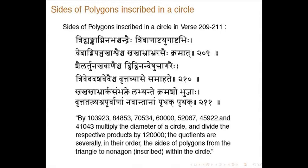For instance, if you take the triangle inscribed in a circle, you take 1, 0, 3, 9, 2, 3, multiply by the diameter of the circle and divide by this, then the quotient will be the side of the triangle. Similarly for other things.